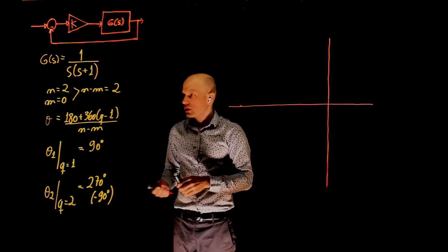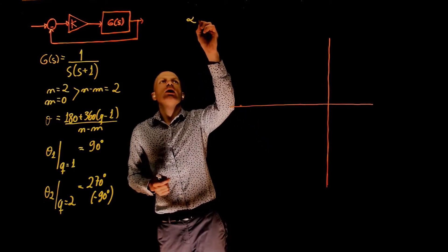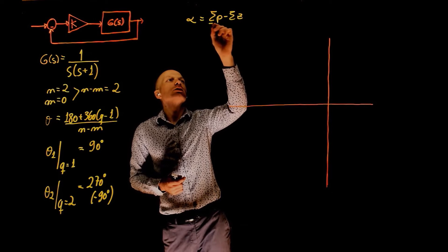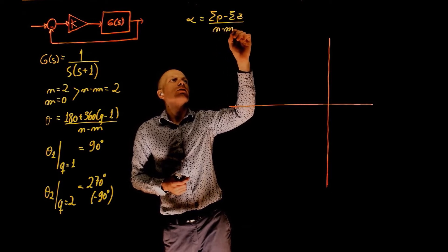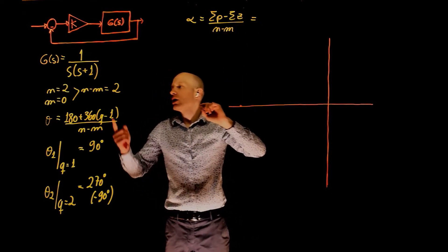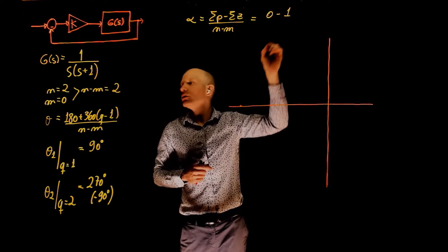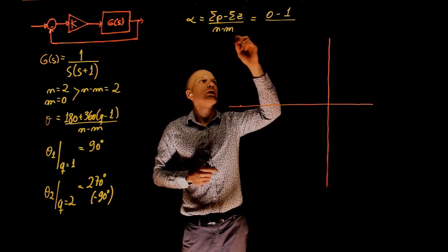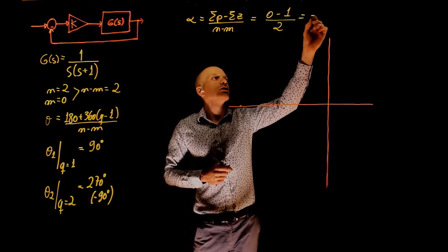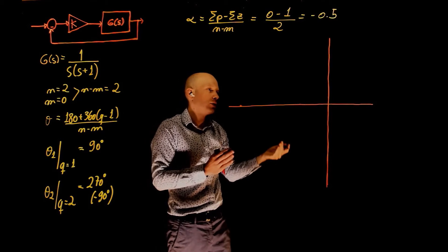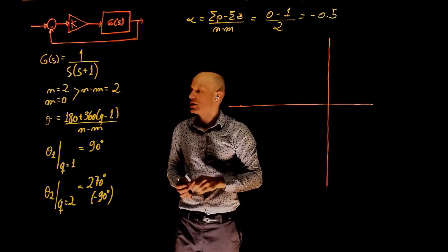We can now determine the centroid of these asymptotes. The centroid that we called alpha is the sum of poles minus the sum of zeros divided by n minus m. The poles are 0 and negative 1 divided by 2. This is negative 0.5. This is where the asymptotes meet, that's where the centroid of the asymptote is.